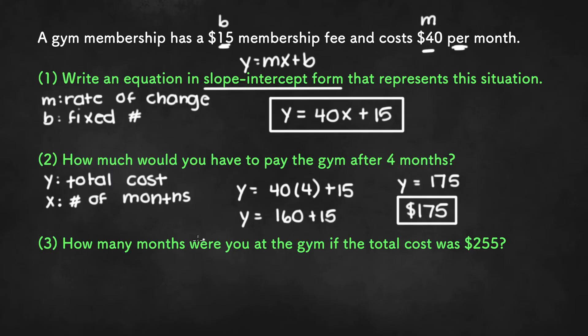So the last part of this word problem asks, how many months were you at the gym if the total cost was $255? Since we are given the total cost or the y value and we are asked to find the number of months, we need to plug in 255 for y and solve for x.